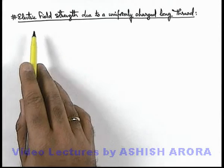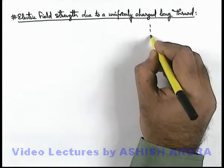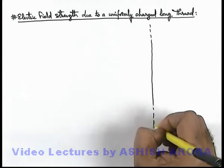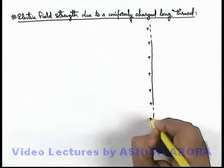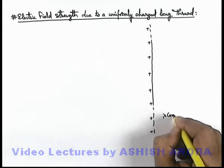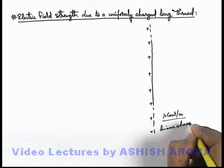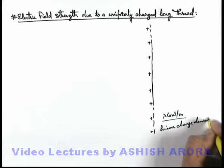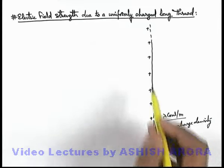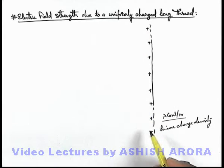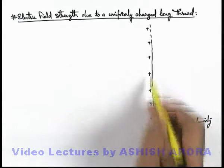Let's study the electric field strength due to a uniformly charged long thread. We are given a straight long thread uniformly charged with a positive charge of linear charge density lambda coulombs per meter. Since it is positively charged, the electric field in its surrounding will be in the radially outward direction, originating from the thread.